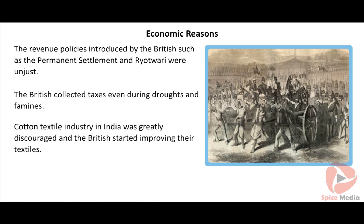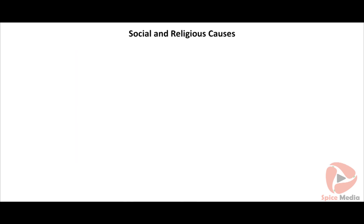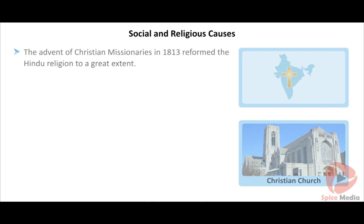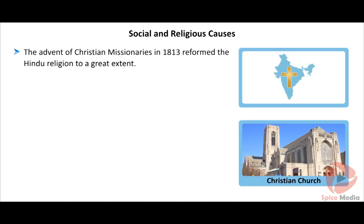With the advent of the Industrial Revolution, the British established cotton textile industries in their country and took no measures to improve agriculture in India. As a result, the British discouraged the cotton textile industry in India and India was made a market for British goods.